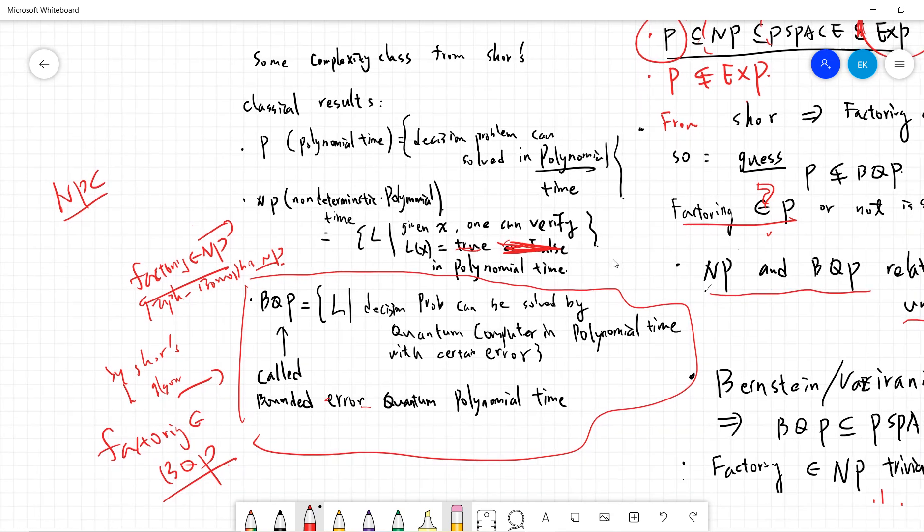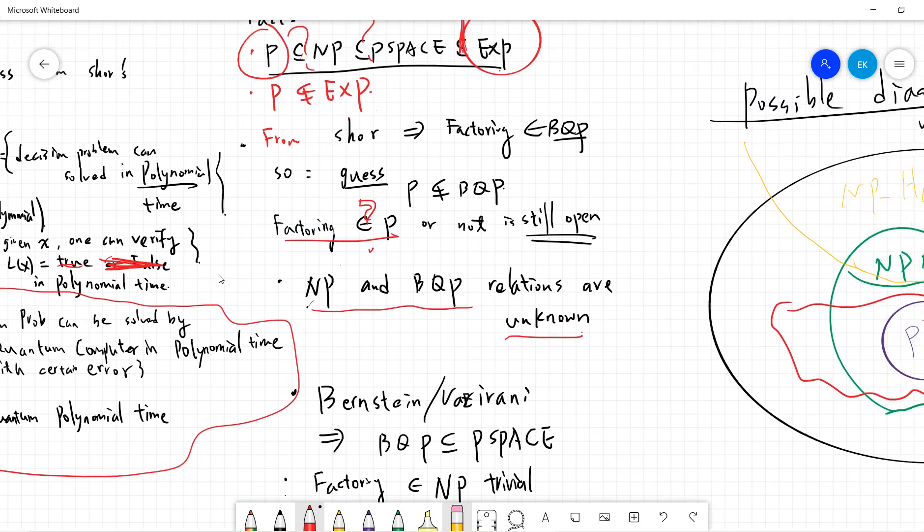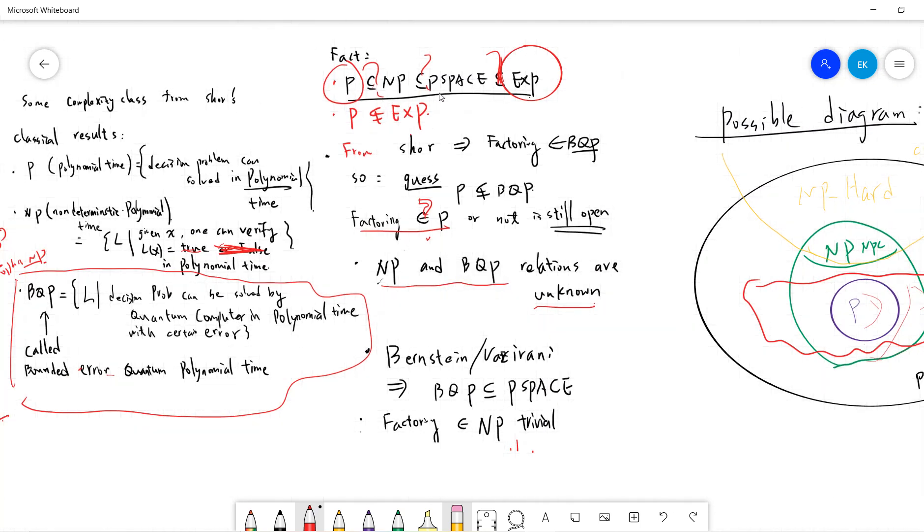Now let's see some open problems and some facts. From classical complexity theory, we know that P is a subset of NP, which is a subset of PSPACE. PSPACE means you can use arbitrary polynomial size of memory. And EXP means exponential time. So P is less than EXP, and P is a subset of NP, and P is subset of PSPACE.